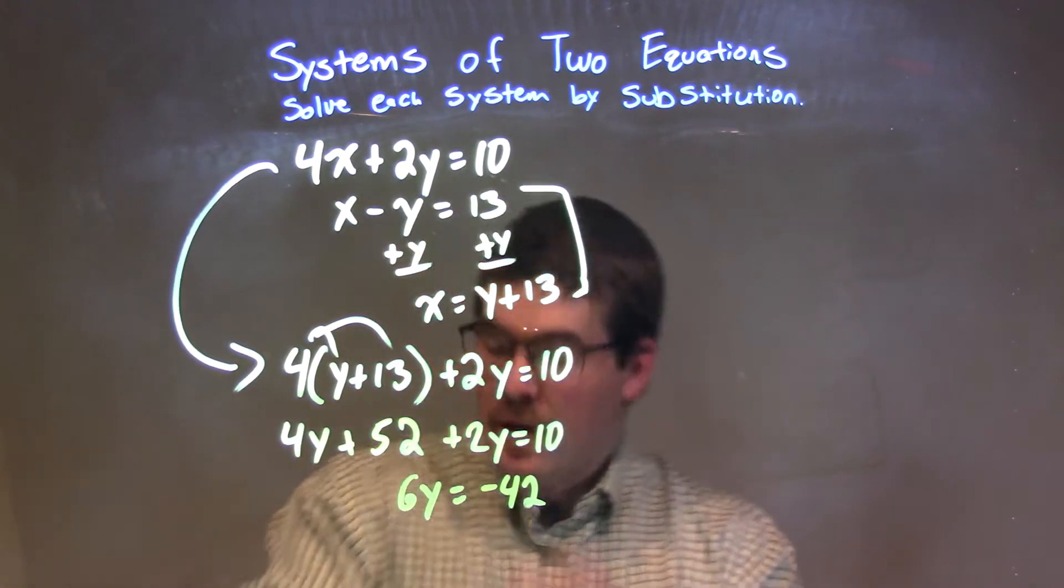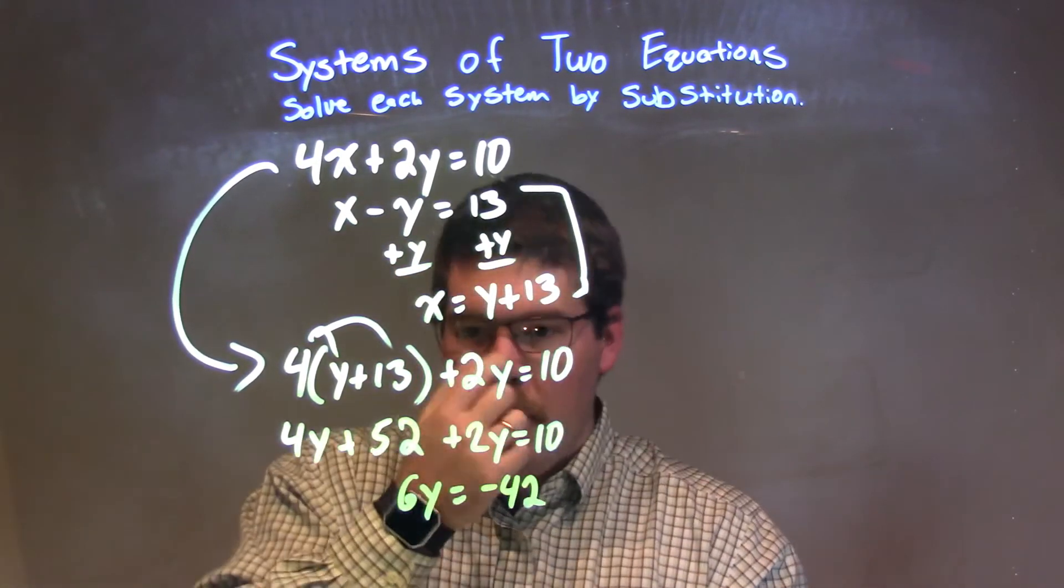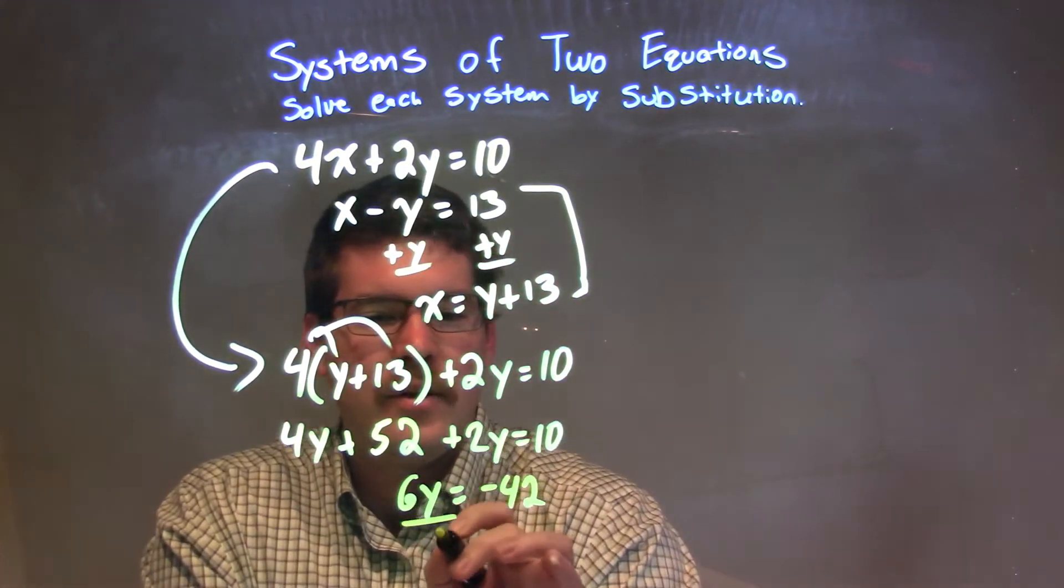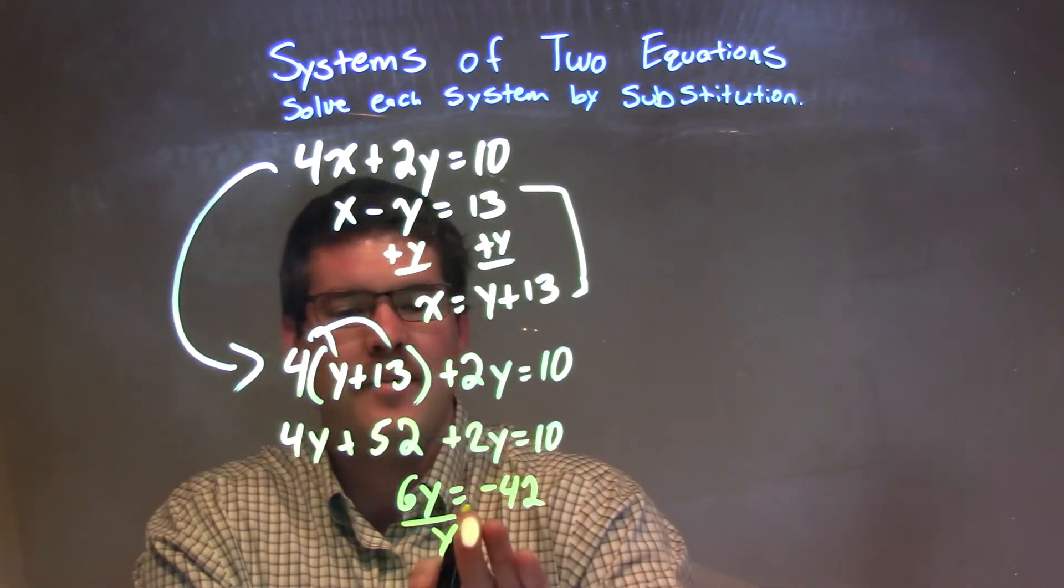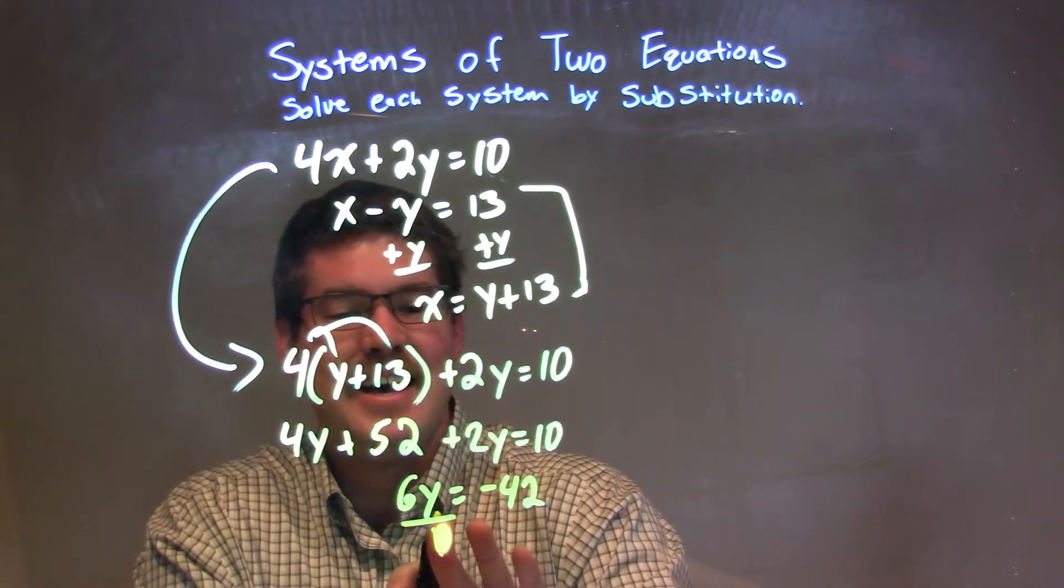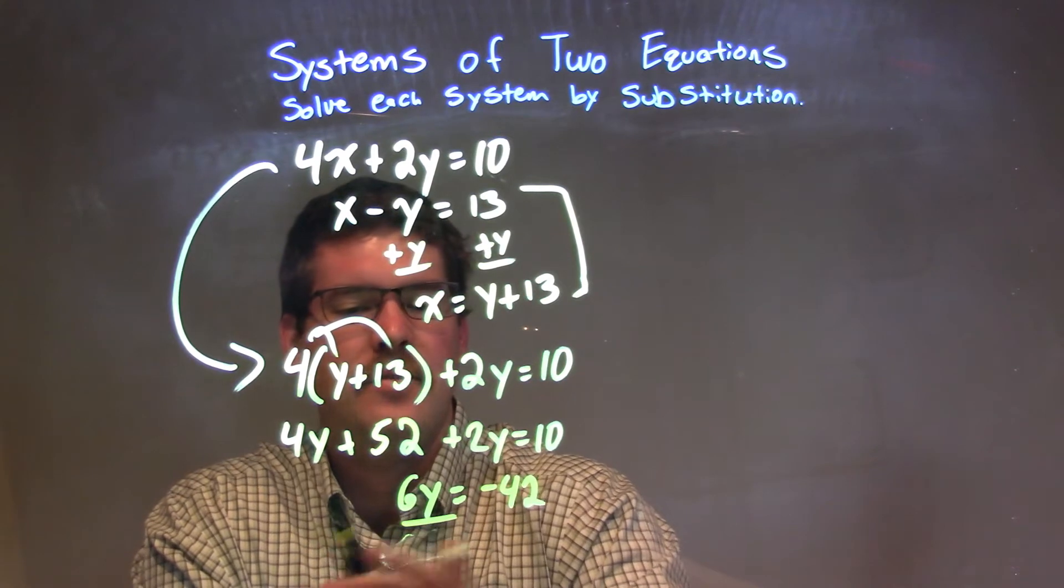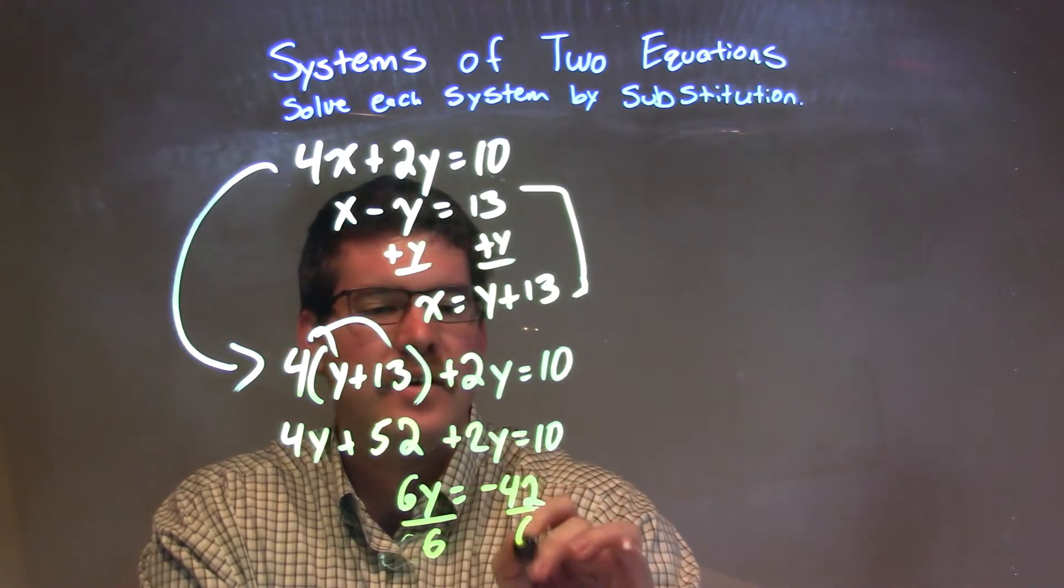Now, from here, we want to get y by itself, so I'm going to divide both sides by 6.